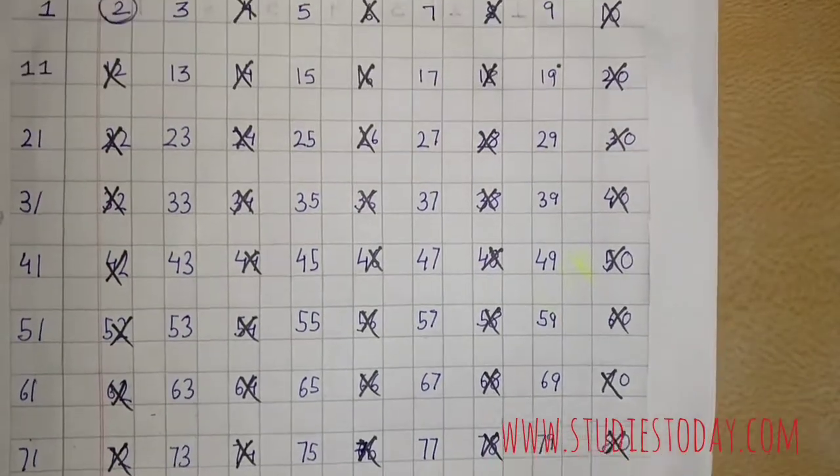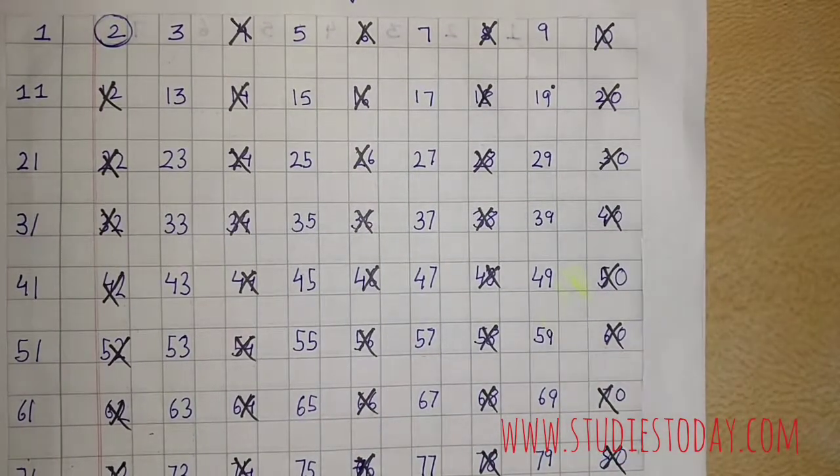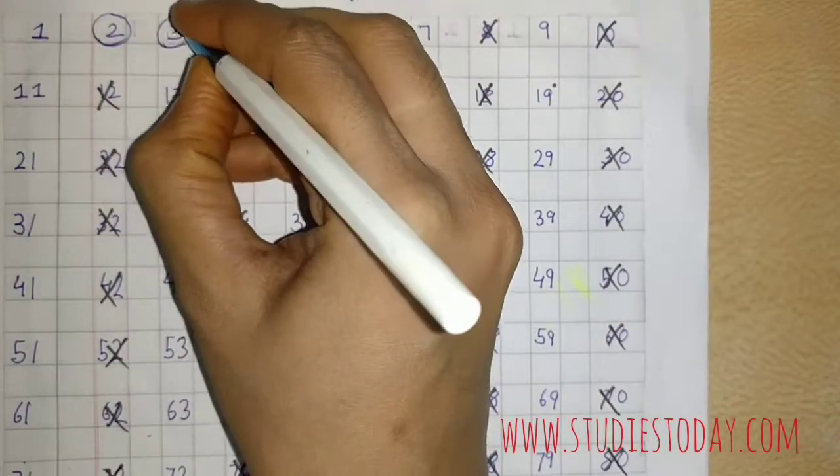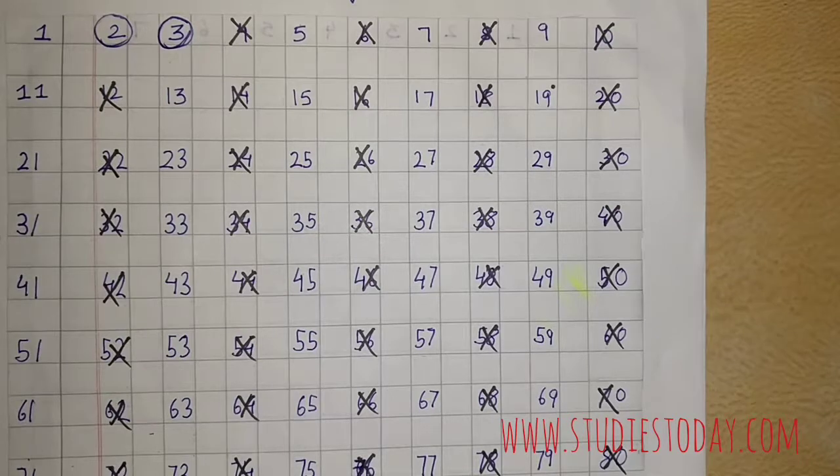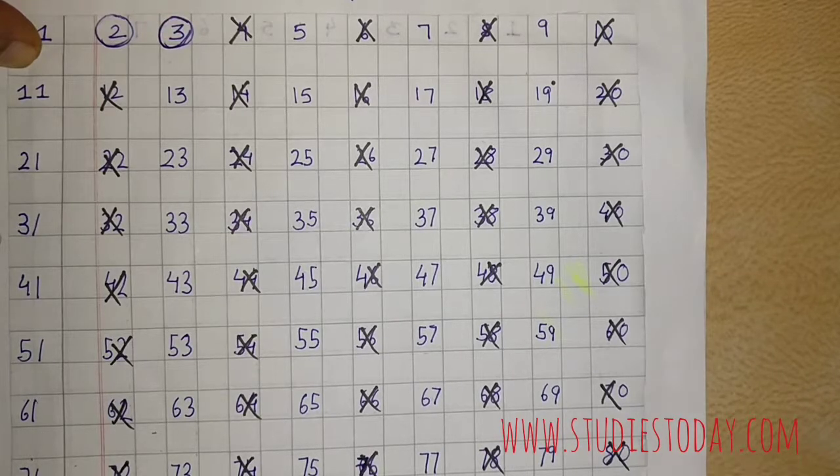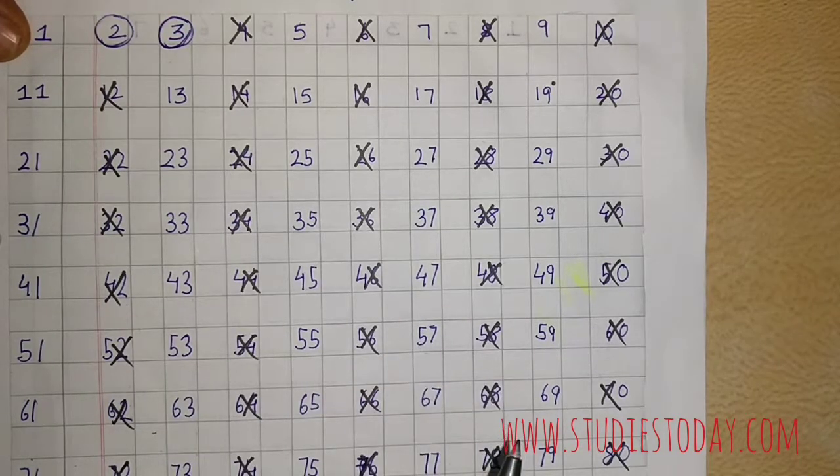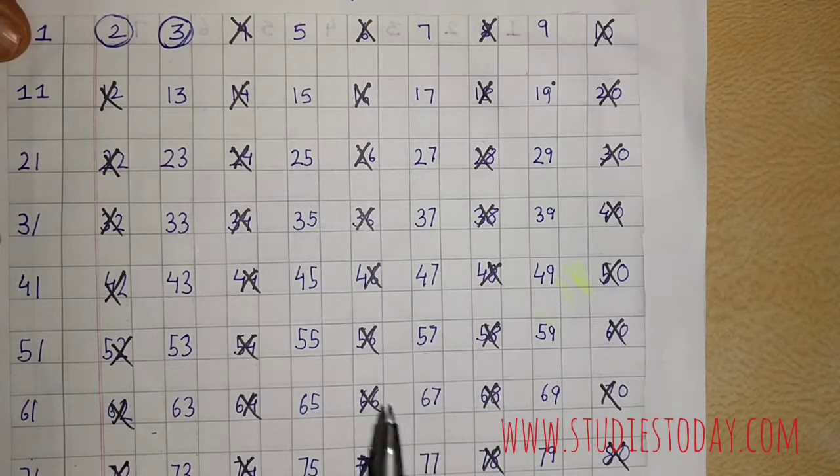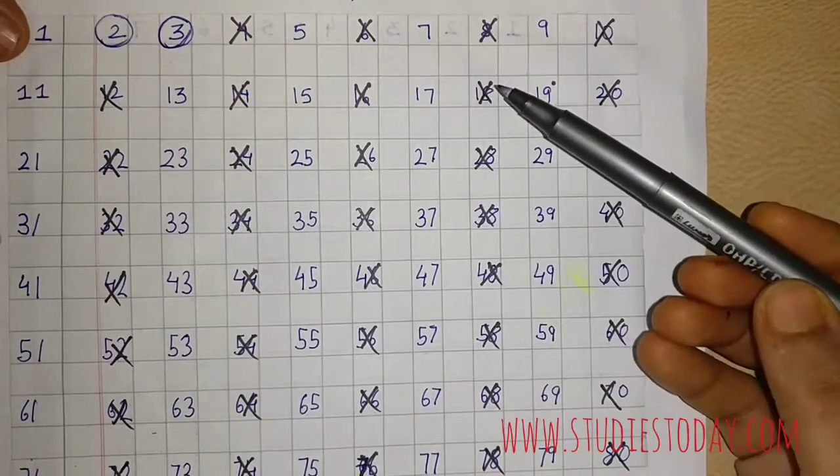Now we come back to the next number 3. As 2 is not the factor of 3, I circle that. I realize that 3 has only 2 factors, one is 1 and another is 3. Now all the numbers which are the multiples of 3 will get cut.